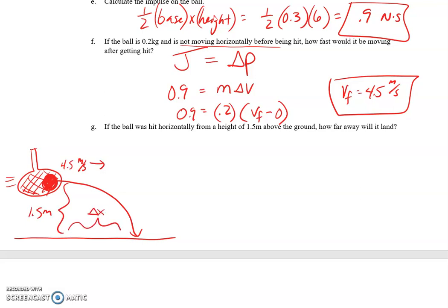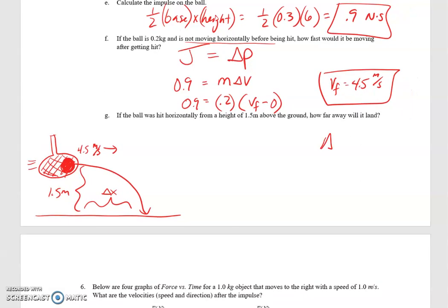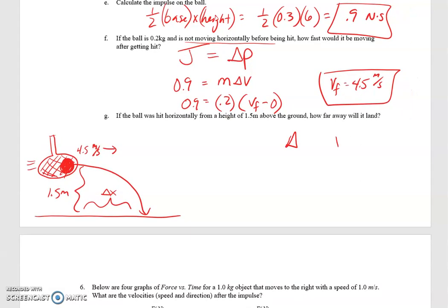So this is just a projectile motion problem to get delta x. We need to know two things. The x velocity, which is 4-and-a-half, and the timing there. 4.5 times whatever t ends up being. That's what we're going to do to find out x.